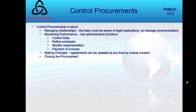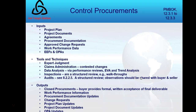Here we go — the very last process in the entire book. Well done! Control Procurements is about managing those procurement relationships we have just built, monitoring their performance, making changes, and closing the contract. We're going to make sure that both the seller's and the buyer's performance meet the project requirements.